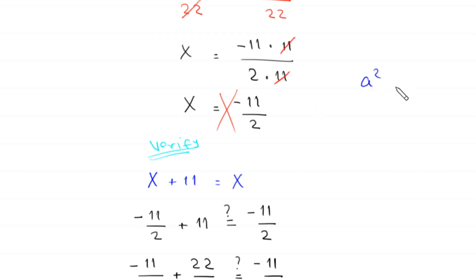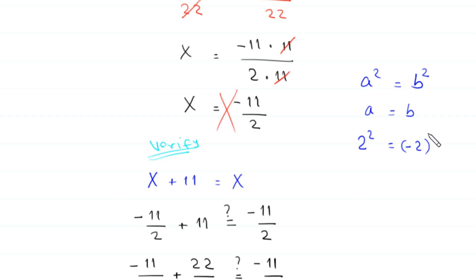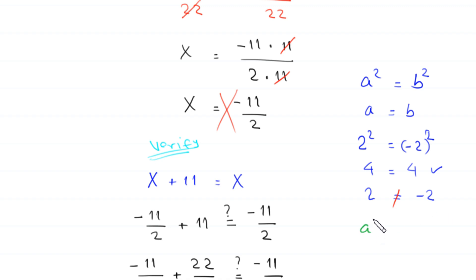But why is it not a solution? Because if a squared equals b squared, this does not mean that a equals b. For example, 2 squared equals negative 2 squared — both equal 4 — but 2 is not equal to negative 2. It means that if a squared equals b squared, then the absolute value of a equals the absolute value of b.